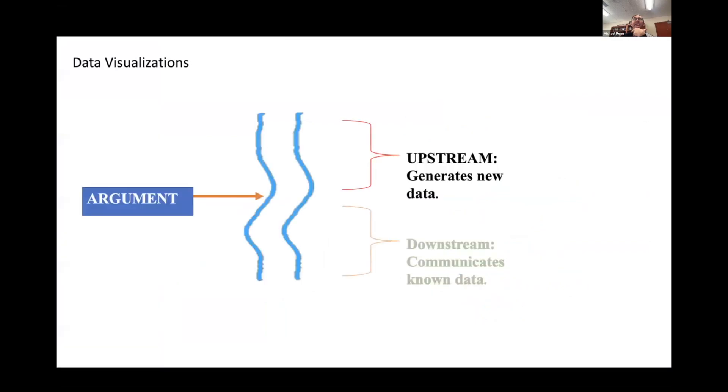Data visualizations often have a tendency to fall into two categories. The one we're most familiar with are those that are downstream from an argument. That is, a researcher goes through a lot of data, comes to hypotheses and conclusions, and then shares those with visualizations in something like a PowerPoint slide. There's a field of data science called visual analytics that switches this equation. Visual analytics takes a very complicated data set and uses data visualizations not to share arguments, but rather to form the arguments and analyze the data in the first place.